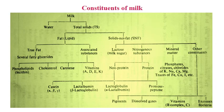Here we will understand the constituents of milk. There are different components in milk, broadly divided as water and solids. The total solids are divided into two parts: one is the fat or lipid portion, and another is the non-fat portion called solids not fat, or SNF — a very commonly used term in dairy. In the fat portion there is true fat, mostly triglycerides, and other associated substances including phospholipids, cholesterol, carotene, and fat soluble vitamins A, D, E, and K.